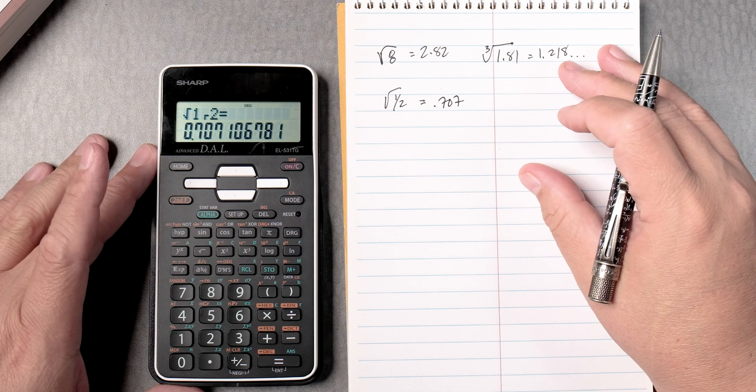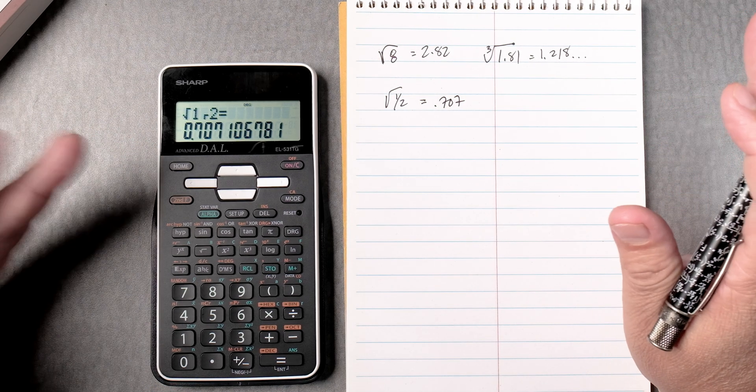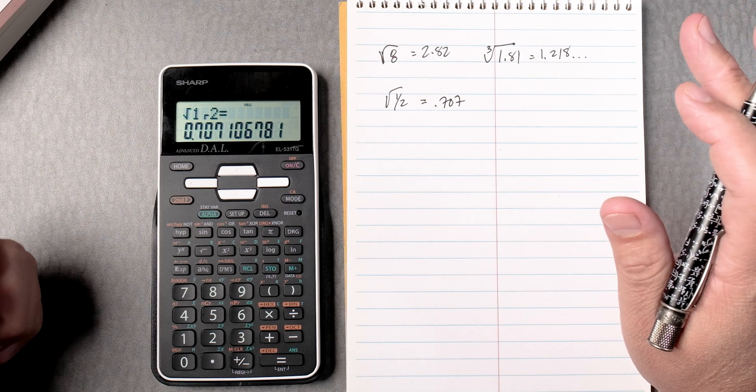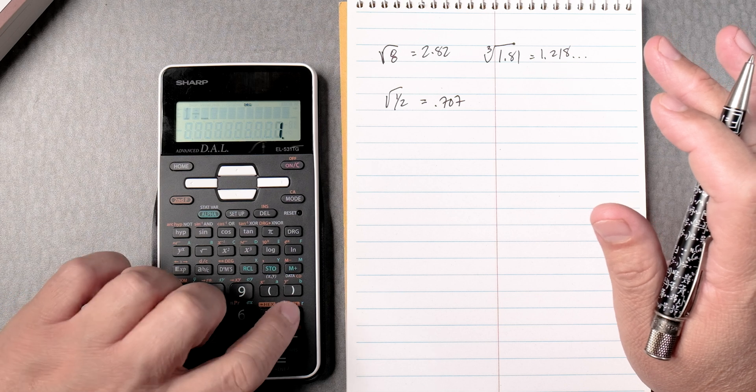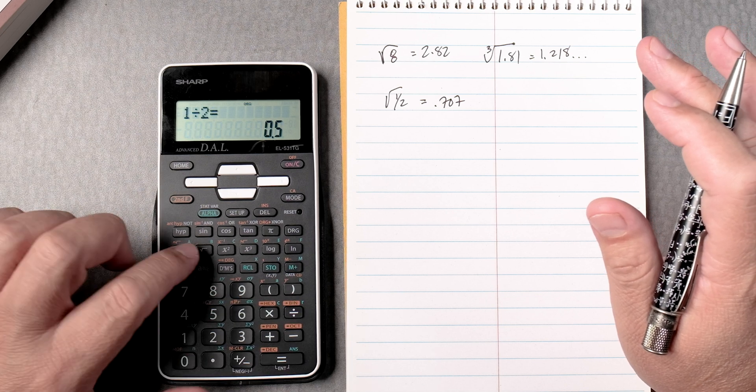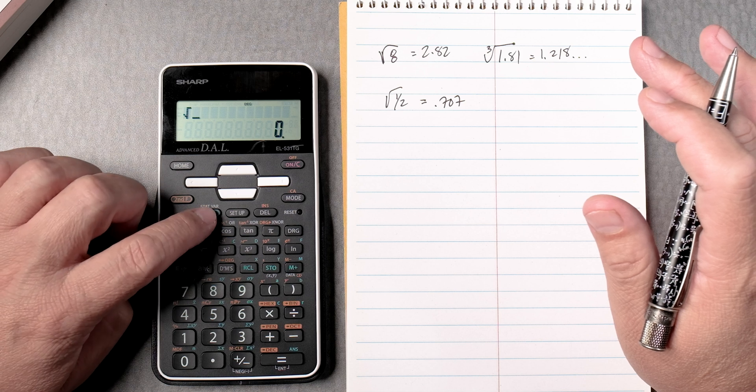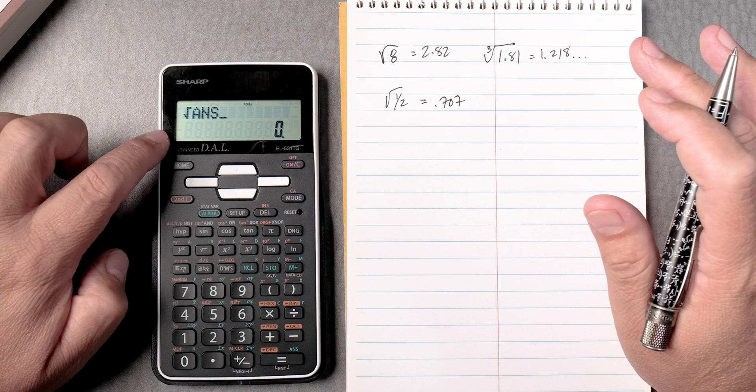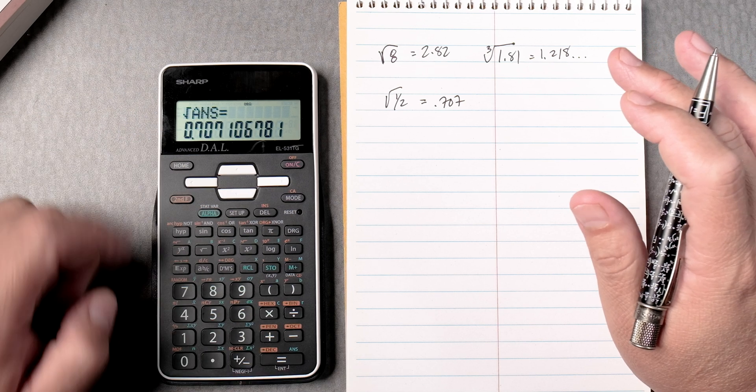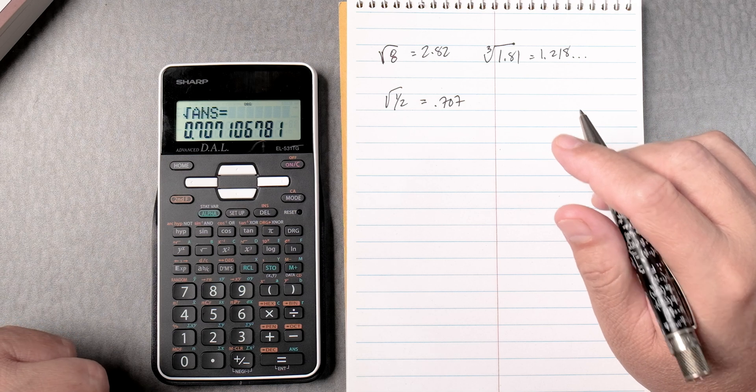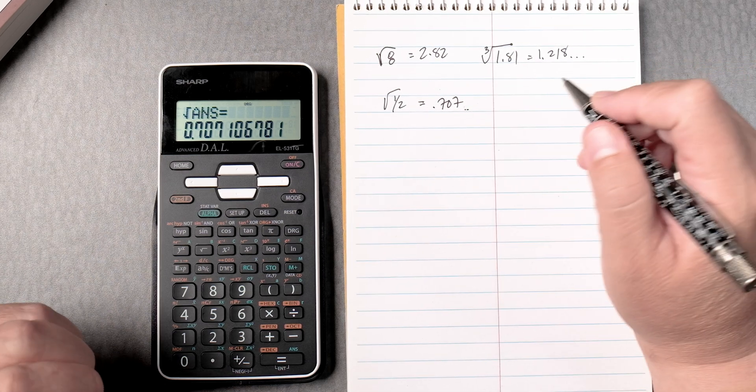Now, if you're unsure in any calculator, if you're not sure this is correct, you can always say 1 divided by 2, press equals, then the square root, and then you can say alpha equals for the answer, previous answer and it gives you that 0.707.